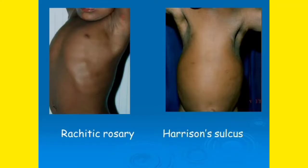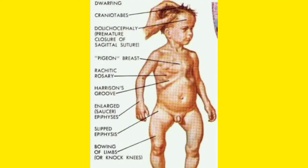Rachitic rosary is the widening of the costochondral junction — 'chondral' means cartilage, 'costo' means ribs — so when the junction between the ribs and the cartilage is widened, it forms the rachitic rosary, a classic feature of rickets. Harrison's sulcus has also been discussed previously.